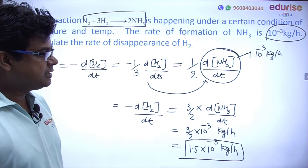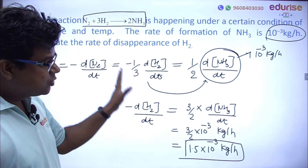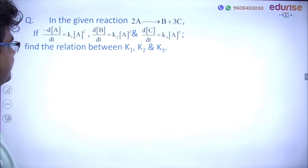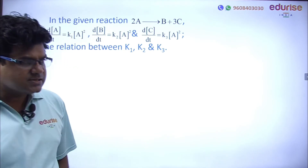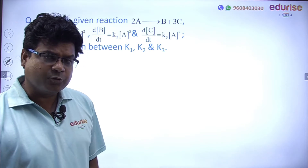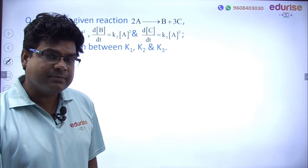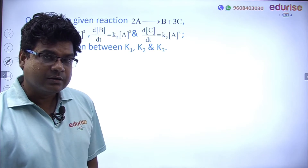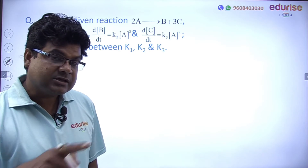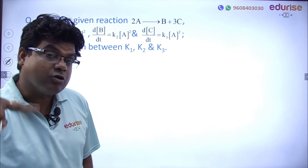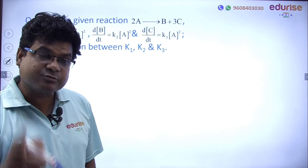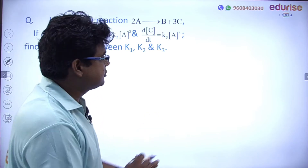Understand this next question well. In the first class I discussed that in this chapter we deal with irreversible reactions — reactant converts into product in one direction, so the reaction will eventually complete. For zero order, first order, second order reactions, we will derive expressions. The next question: irreversible reaction 2A → B + 3C. We have to find the relation between K₁, K₂, and K₃.